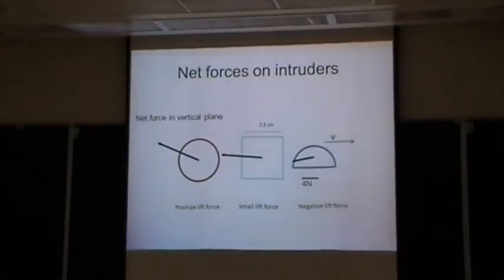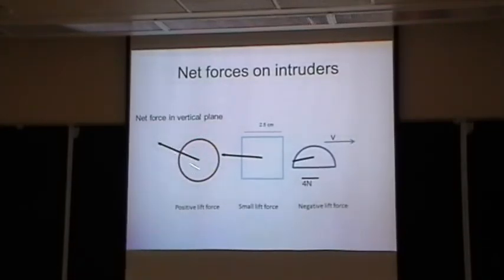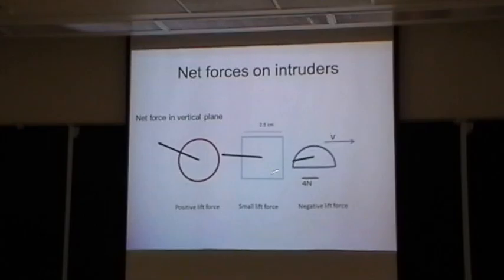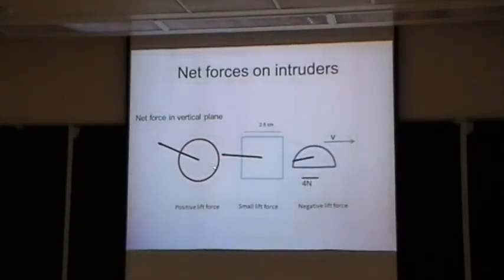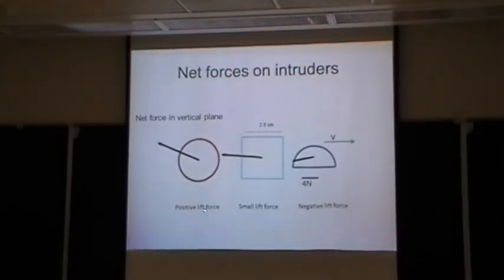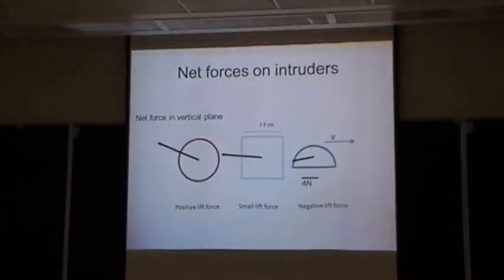Here's what we see — actual experimental data showing different shapes. The black lines are the net forces on the intruder as a function of shape at a particular depth. For scale, it's about four newtons. You can see the length of these arrows doesn't vary too much with shape, but the vertical component is quite different. The circle has a positive vertical component, indicating it would be pushed upward — a positive lifting force. The square has a small but still positive lift force. And the airfoil shape has the opposite lift force, as you would expect — it gets pushed downward as it moves through the material.